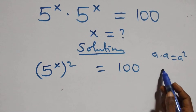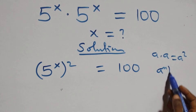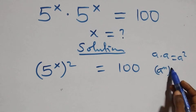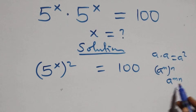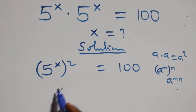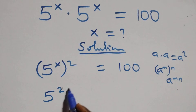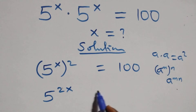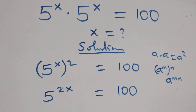This also follows when we have a raised to a power, raised to another power — the same thing as a raised to the product of those powers. So we have 5 raised to power 2x, equals to 100.